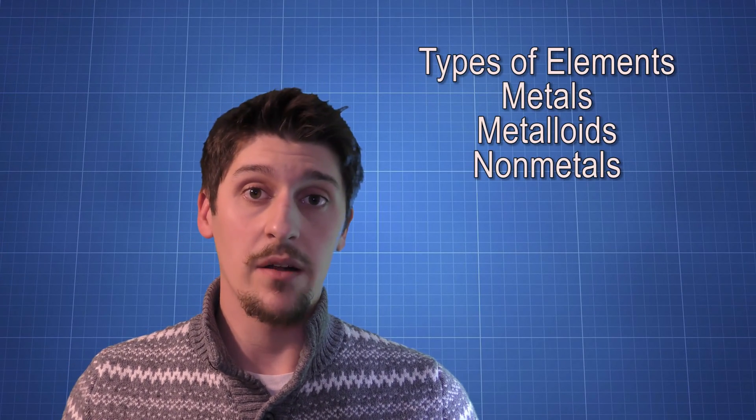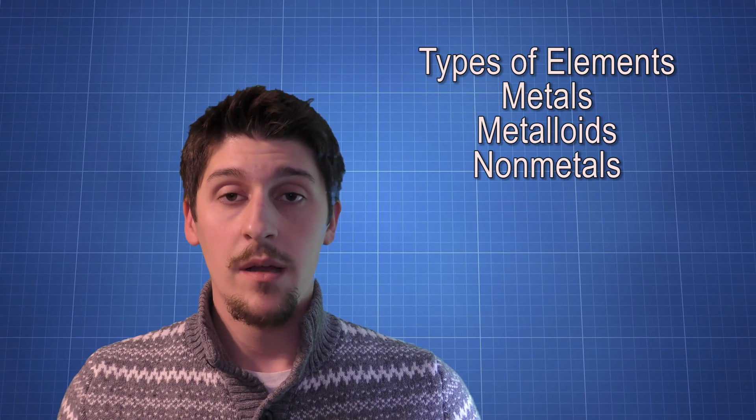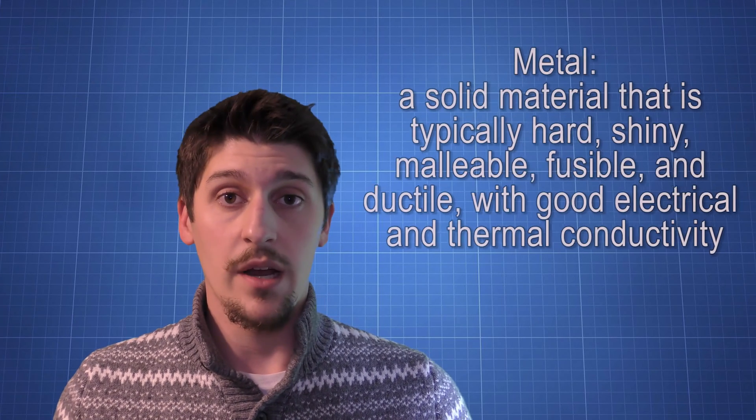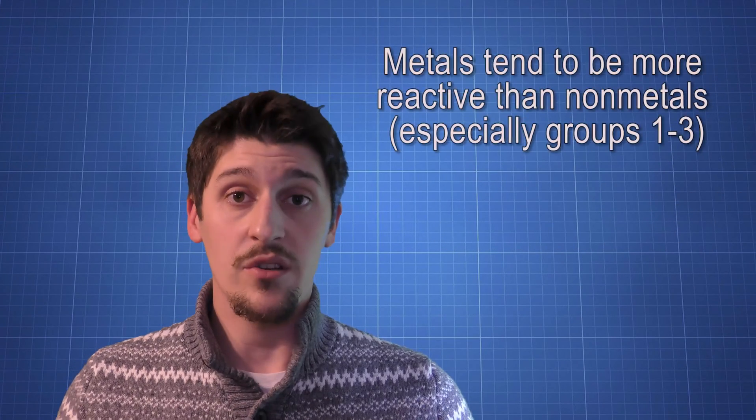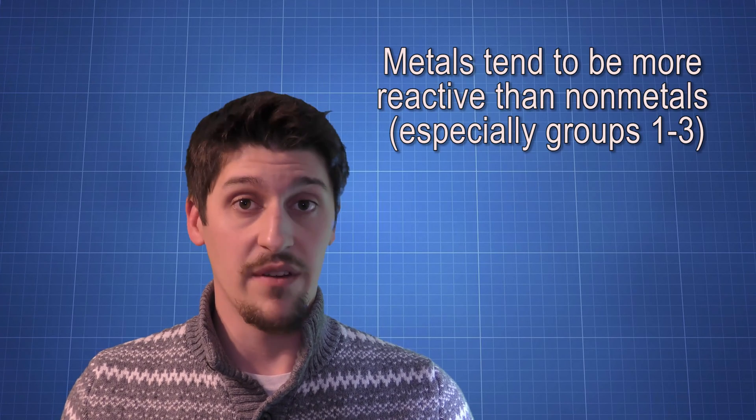There are three kinds of elements: metals, non-metals, and metalloids. Metals are on the left side of the periodic table. They tend to be shiny, soft, and good conductors of electricity and heat. They're also usually pretty reactive to different things.